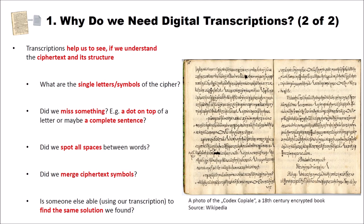There are other reasons why we need transcriptions. Transcriptions help us see if we understand the ciphertext and its structure — for instance, what are single letters or symbols of the cipher. When we create a transcription, we have something to discuss with others, and we can see if we miss something, for instance a dot on top of a symbol. A small c with a dot on top has a different meaning than a c without one. Having a transcription tells us how another person understood the ciphertext. We can also see if we spotted all spaces between words, which are really helpful for cryptanalysis.